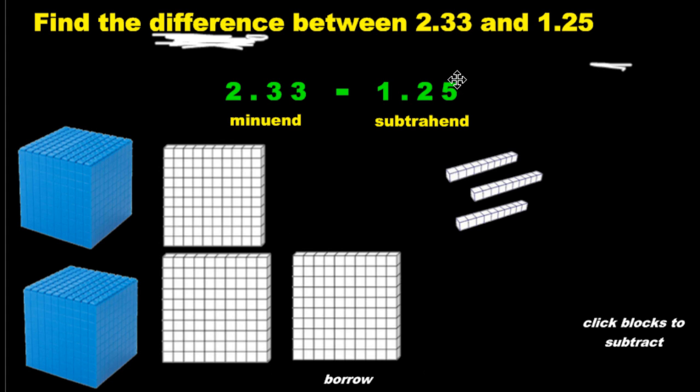And we have to subtract five of the hundredths. But we have a problem because there's only three of them. So what do we do? Same as what you did back in grade three, four, and five when you had to subtract numbers. You need to borrow.